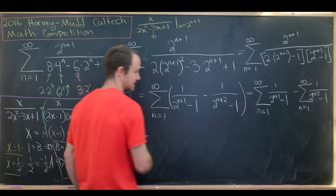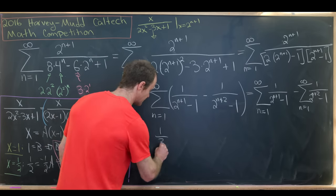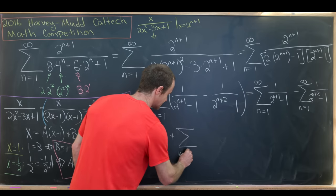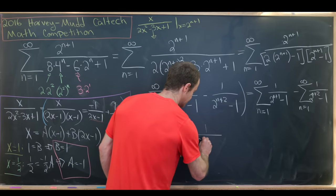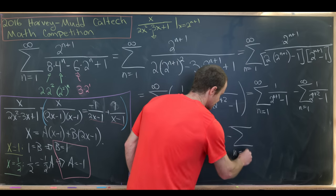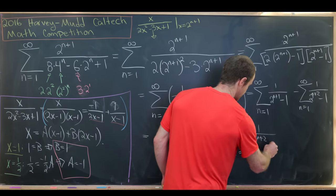Great. And so that's going to give us the n equals 1 term from this first sum. The n equals 1 term is 1/3. And then we'll have plus the sum as n goes from 2 to infinity of 1 over (2^(n+1) - 1), and then minus the sum as n goes from 1 to infinity of 1 over (2^(n+2) - 1).